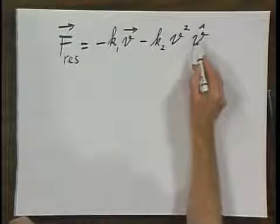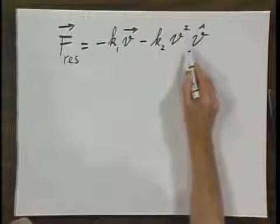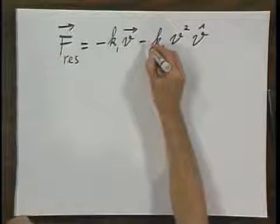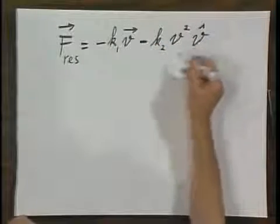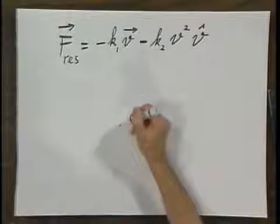But each of them oppose the direction of the velocity. That's why you see the minus V roof here, and the minus V.